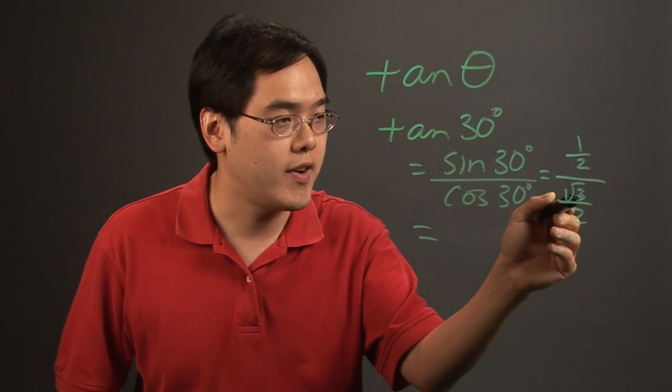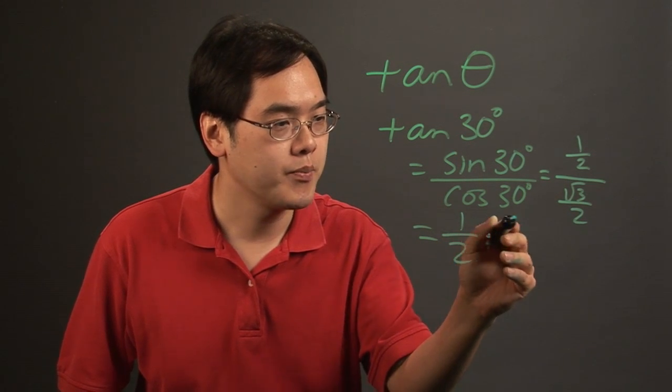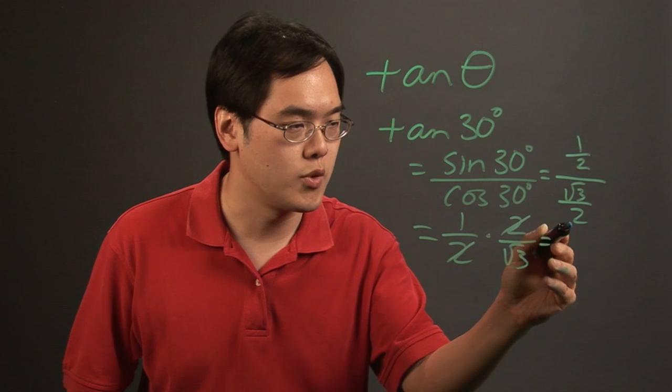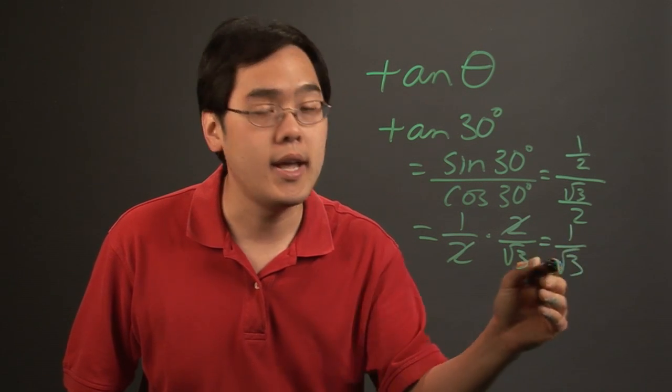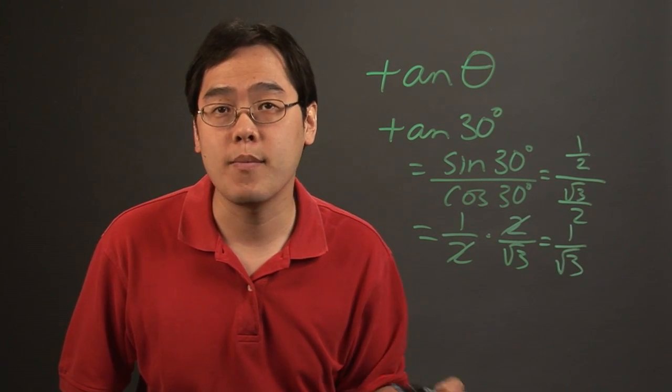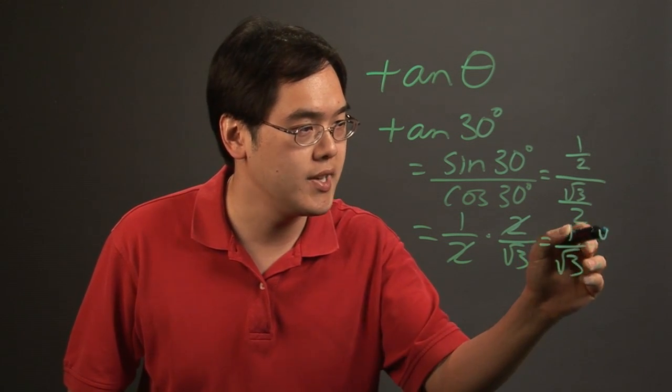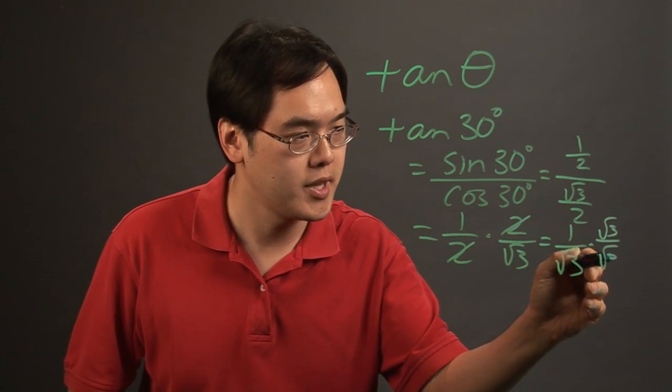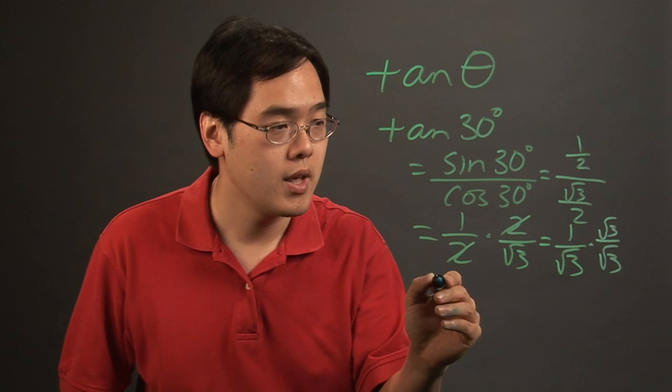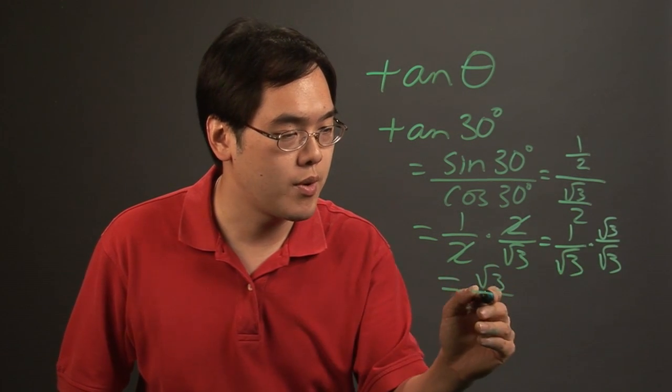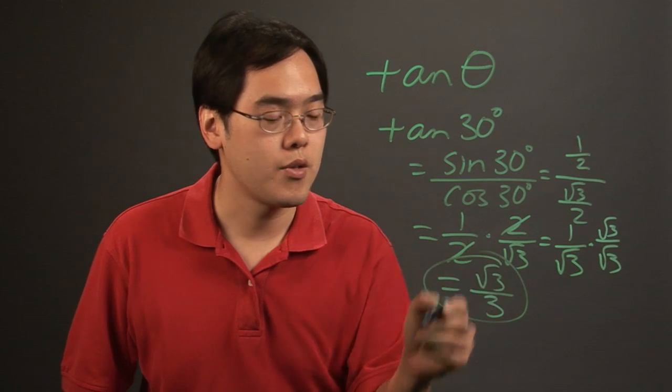So one-half divided by square root of 3 over 2 is like saying one-half times 2 over square root of 3. The twos cancel, so you're left with 1 over square root of 3. But as with trig classes and higher math courses, you really shouldn't leave a radical in the denominator, so you want to rationalize the denominator by multiplying the top and bottom by square root of 3. You'll have square root of 3 over square root of 3 times square root of 3.